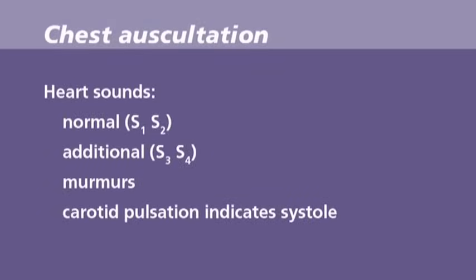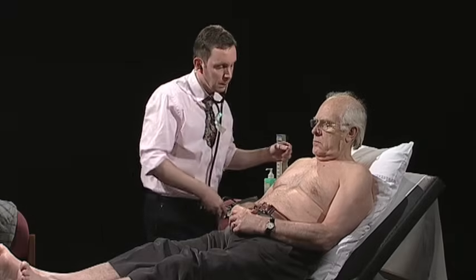Auscultation of the heart should start at the apex. It is important to identify the first and second heart sounds, then the additional sounds S3 or S4, and then any murmurs. There are a number of strategies for auscultating the heart and it is likely you'll develop your own way of doing this. However, it is orthodox to start at the apex and proceed towards the base of the heart. If you need to time the murmurs, then palpate the carotid artery — a pulsation will indicate systole. I'd now like to listen to your heart please.